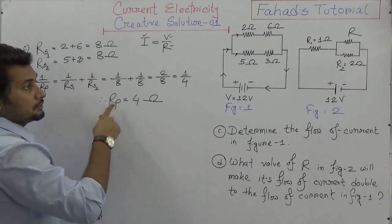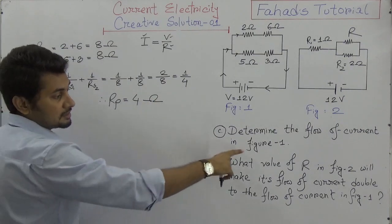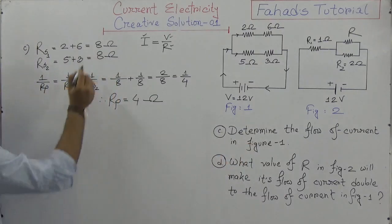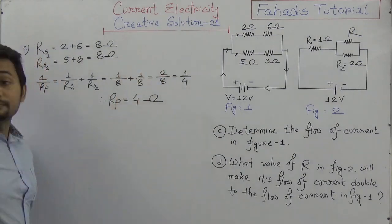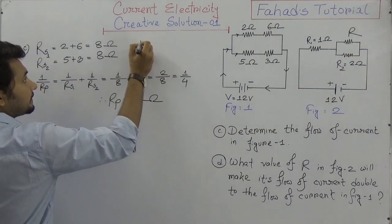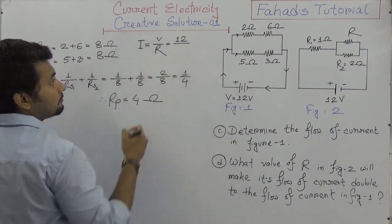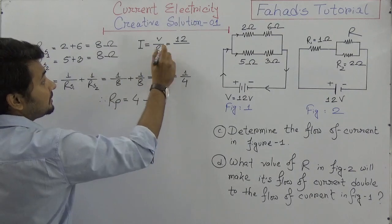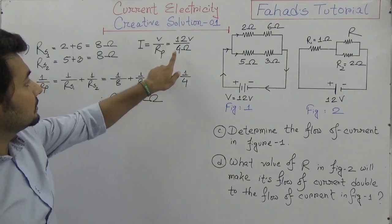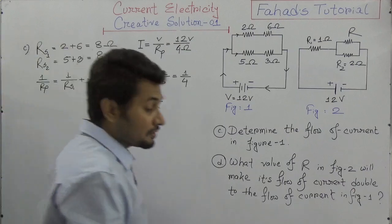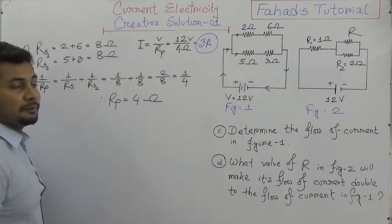We've got the equivalent resistance of figure one — it is four ohms. Now what is the value of I? Since we were asked for the flow of current in figure one, using I equals V divided by R: V is 12 volts and R is four ohms, so I equals 12 divided by 4, which is three amperes.